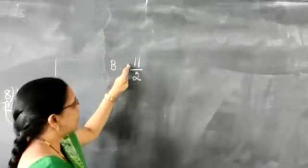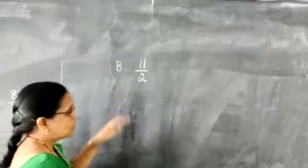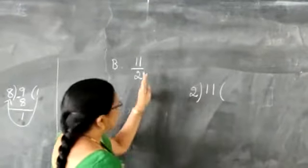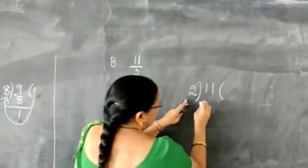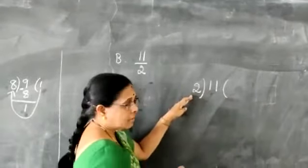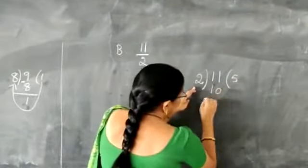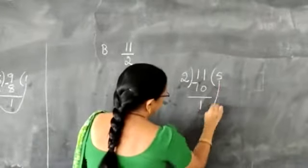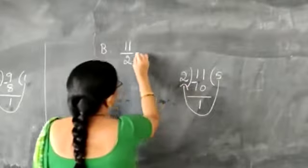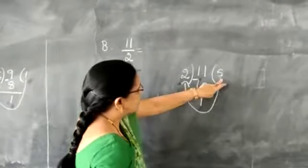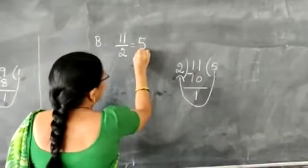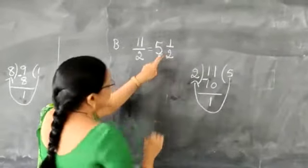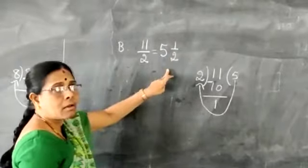Next, part B: 11/2. Divide 11 by 2: 2 fives are 10, remainder is 1. So the answer is 5 whole and 1/2.